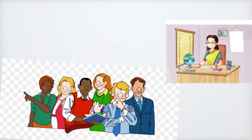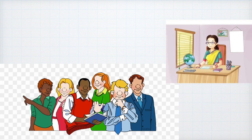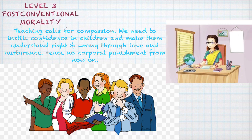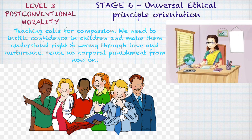The whole episode finally reaches the principal, who holds a meeting with all the teachers of the school and tells them they should not engage in corporal punishment, because teaching calls for compassion and we need to instill confidence in children and help them understand right and wrong through love and nurturance, not through punishment. The principal advises all teachers to instill discipline through modelling good behaviour and practising compassion and care. The principal's response falls under Stage 6, the ethical principle orientation in post-conventional morality, where morality is guided by self-chosen ethical principles of conscience that transcend all laws and rules imposed from the outside.